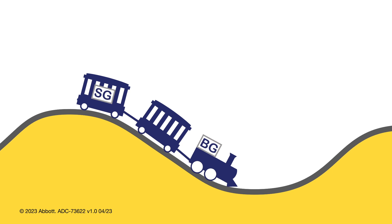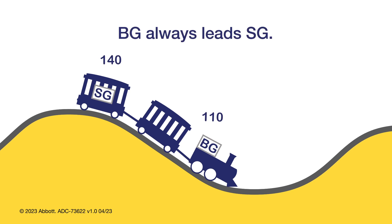Now as the train heads down the hill — when glucose is decreasing or trending down — once again, the blood glucose leads in the front car. So, as you can see, whether glucose levels are trending up or trending down, blood glucose leads sensor glucose.